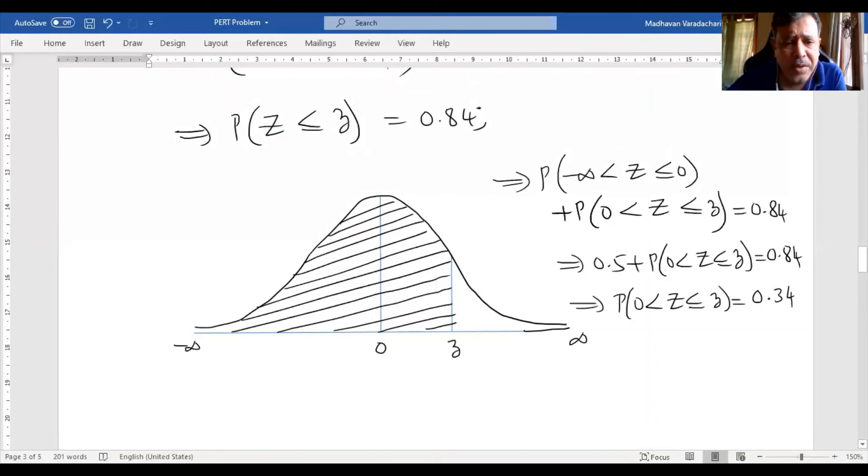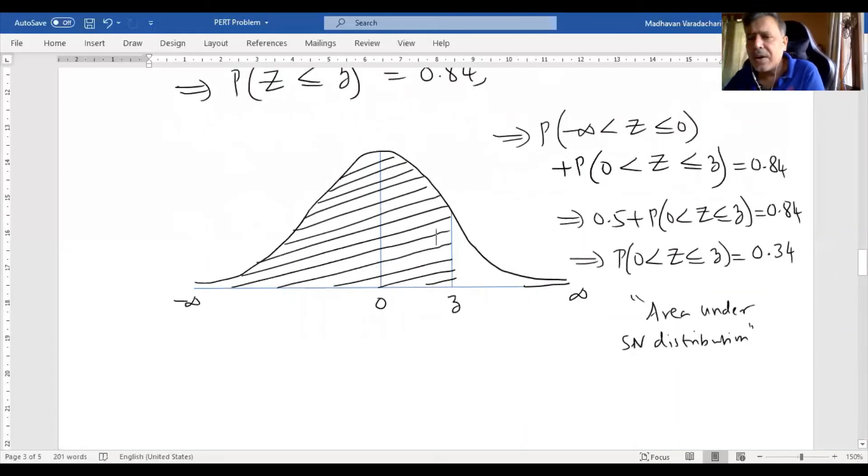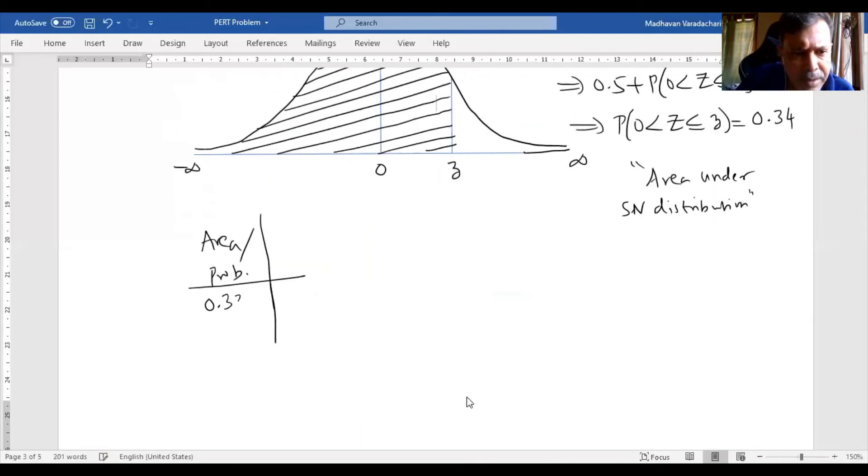The first one is 0.5, so 0.5 plus probability of 0 less than z less than or equal to small z equals 0.84. Therefore probability 0 to z equals 0.84 minus 0.5, which becomes 0.34. I need to identify the z value from the area under standard normal distribution tables. If the area is near 0.34, one number I could get is 0.3389.